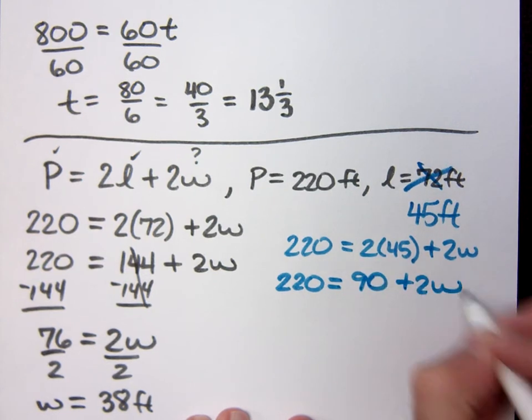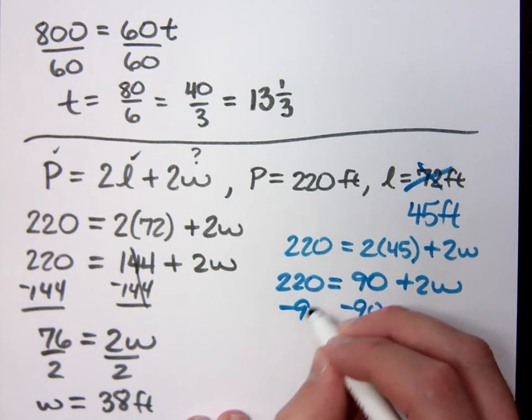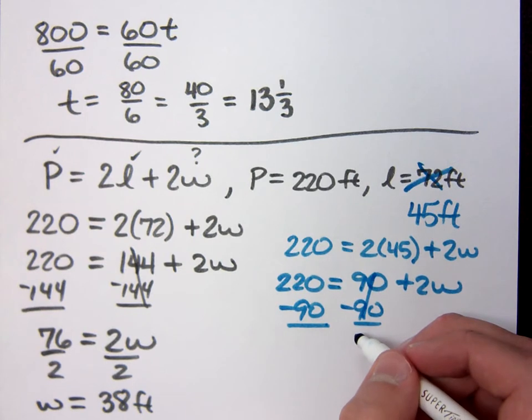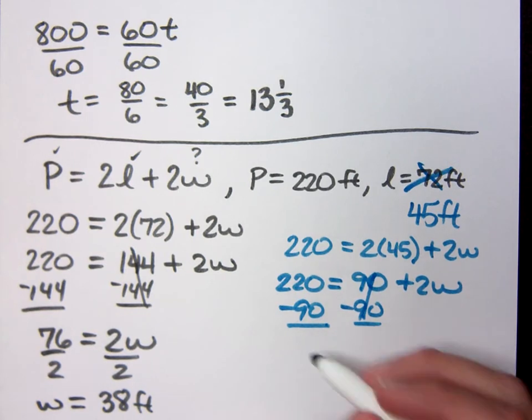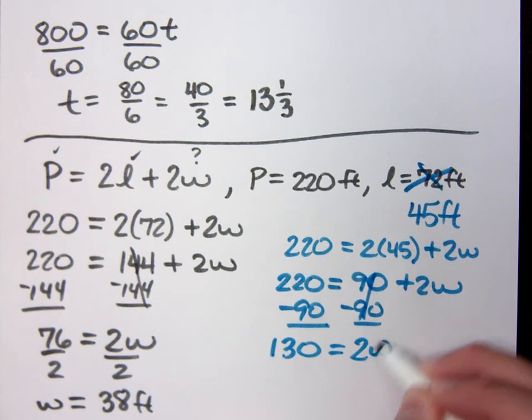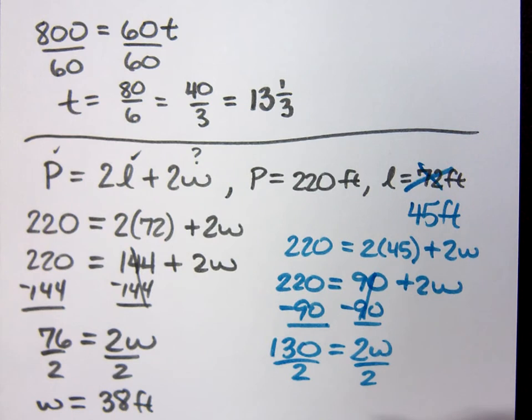That means I've got to take 220=2(45)+2W and solve this, right? 220 equals 90 plus 2W. I solved it once, I can solve it again, right? Just different numbers, same process. What's 220 minus 90? 130 equals 2W. So what does W equal? W equals 65.